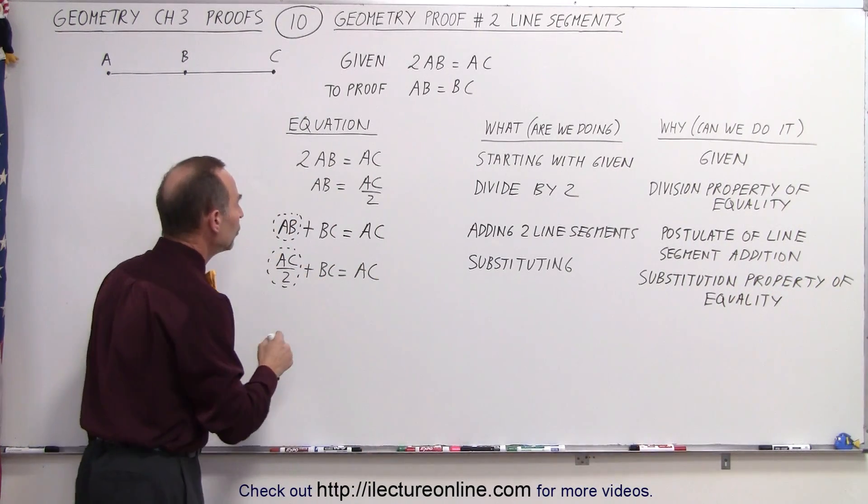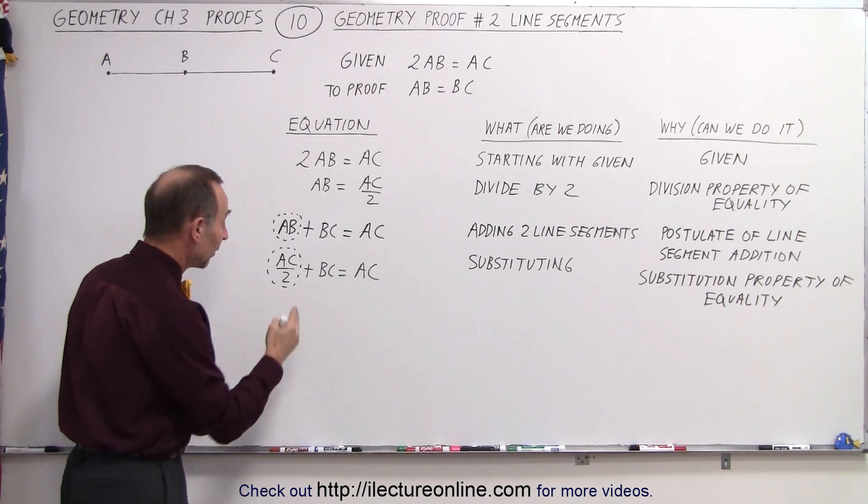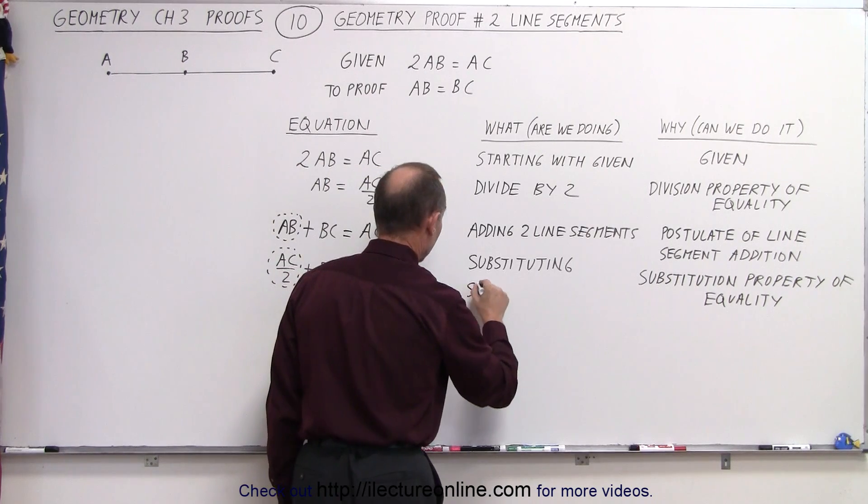Next, what I want to do is I want to get an expression for BC by itself. So what I'm going to do is I'm going to subtract AC divided by 2 from both sides. So subtract.